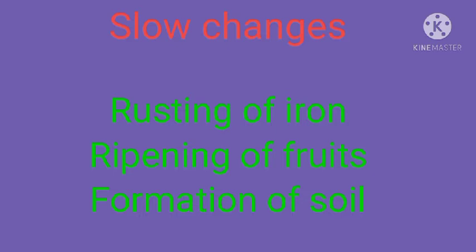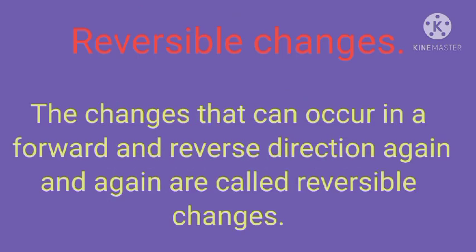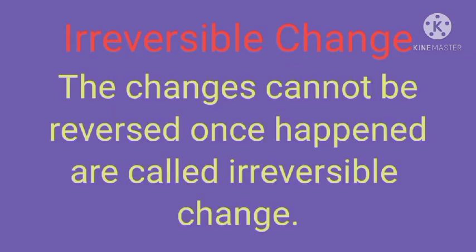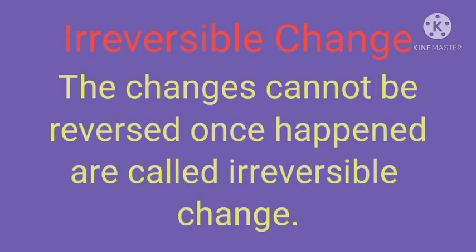Next is the reversible change — changes that can occur in a forward and reverse direction again and again are called reversible changes. For example, if we put water in a refrigerator it changes to ice, and if we heat the ice it changes back to water. Other examples include melting of wax, sugar mixed in water, and water vapor.